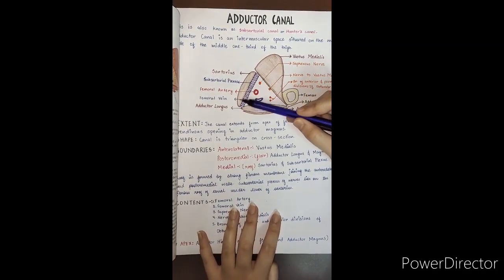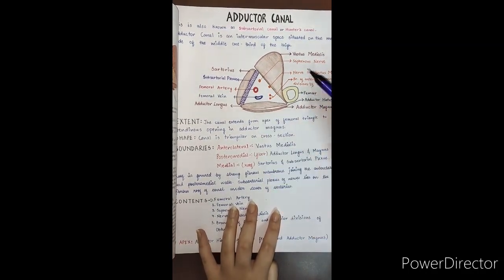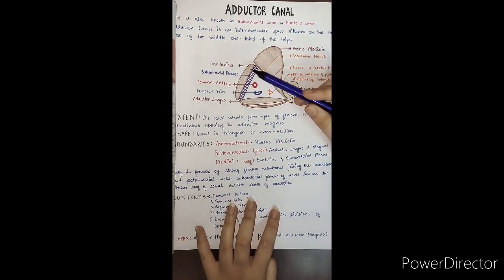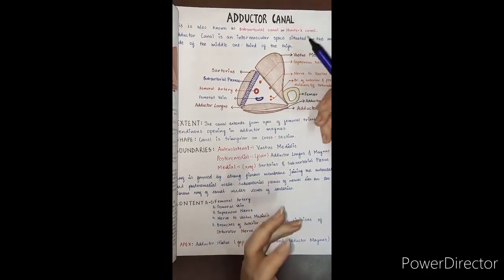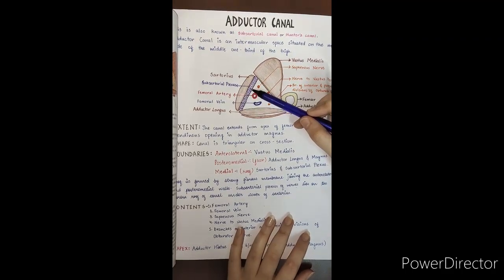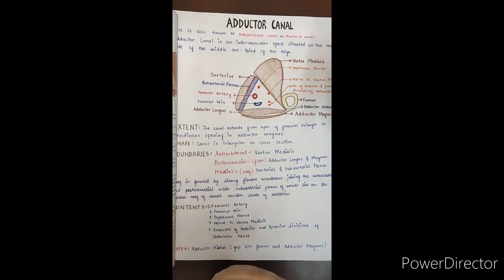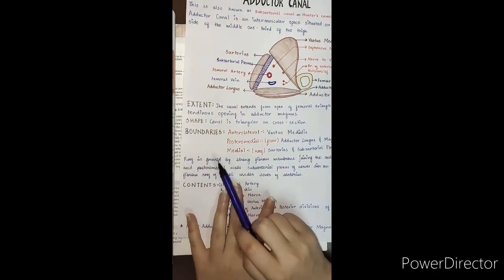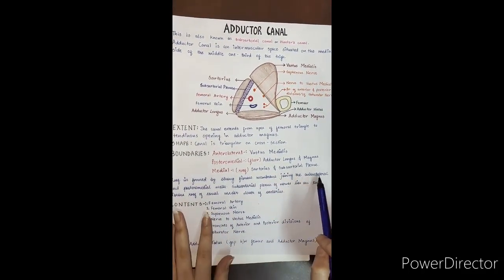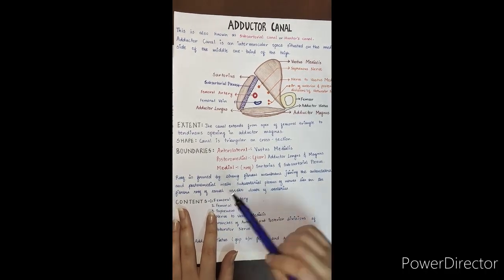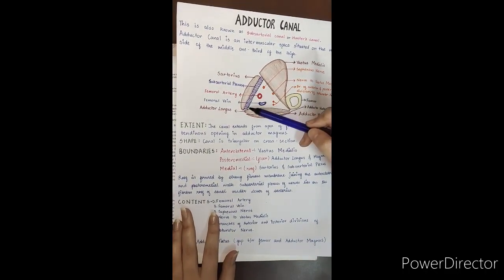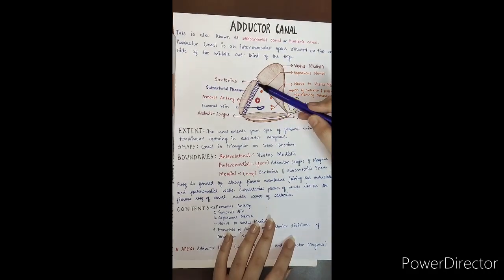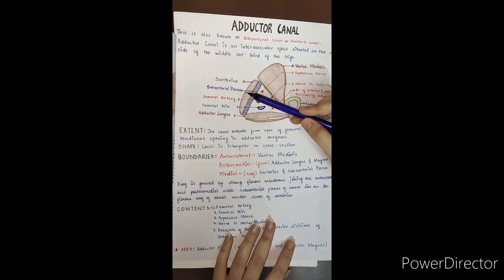The roof is on the medial side. The roof is formed by a strong fibrous membrane joining the anterolateral and posteromedial walls. This fibrous membrane forms the roof, and above it is the sartorius muscle.